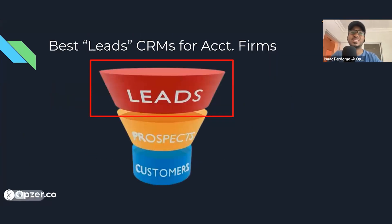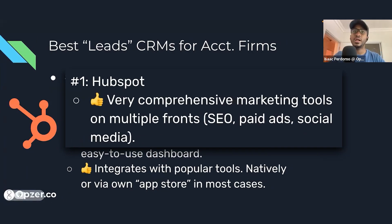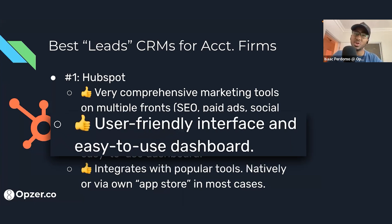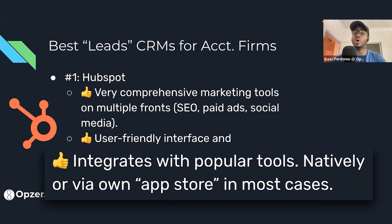Starting with the best CRM for leads in your accounting firm. The first one is HubSpot — an extremely comprehensive tool that covers pretty much all fronts on marketing. If you have a multi-channel marketing strategy doing SEO, paid ads, social media, and newsletters, HubSpot can do it all relatively well across all those channels. It has a very user-friendly interface, which is impressive given how many features it has. It also integrates with popular tools natively and has a marketplace — essentially an app store — where you can find apps to integrate with HubSpot pretty seamlessly.